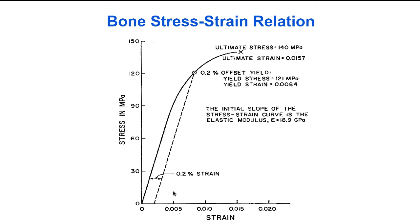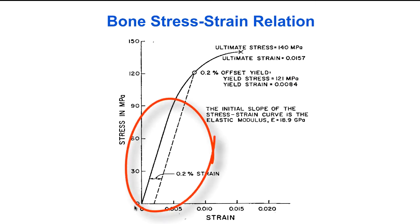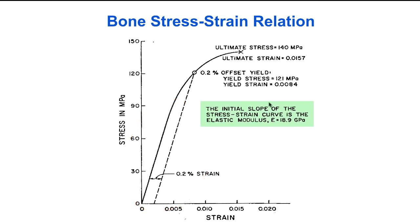So even below 1% strain, damage occurs, and not much above 1% strain, ultimate failure occurs. However, below 0.5% strain, the stress-strain relationship of bone is linear, and the slope of the stress-strain relation — which is the Young's modulus for long bone — is about 18 or 19 GPa.